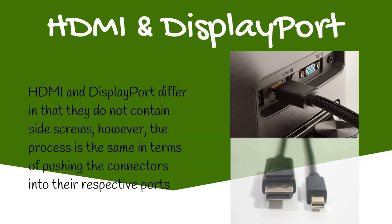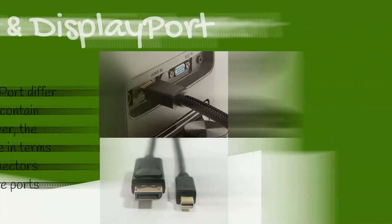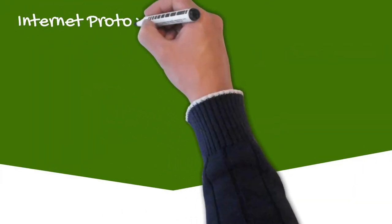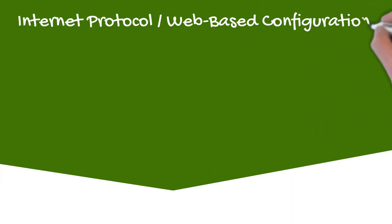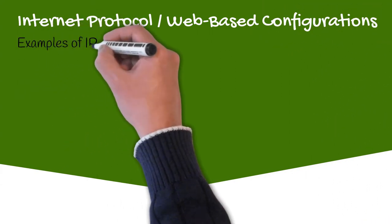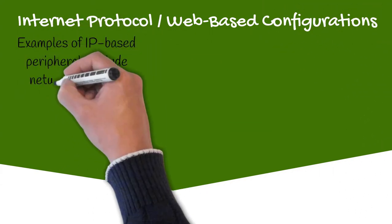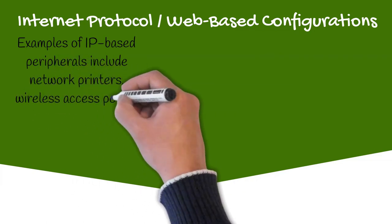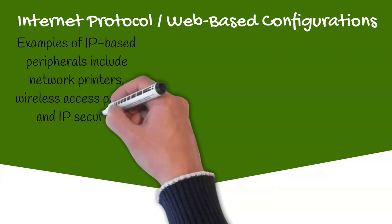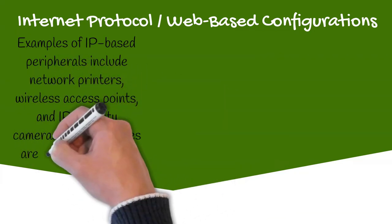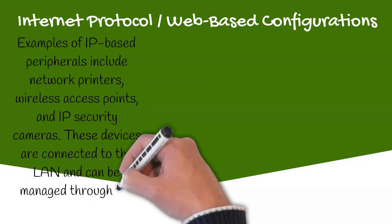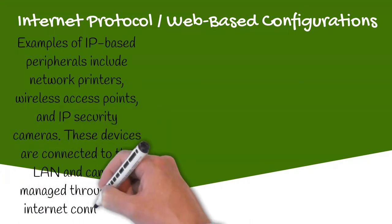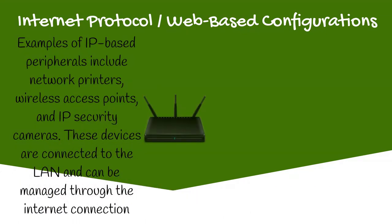Some peripherals use IP, or internet protocol. Examples of IP-based peripherals include network printers, wireless access points, and IP security cameras. When setting up these devices, you will connect the device to the local area network and verify the connection. Once verified, the device should be able to be managed through the internet connection.